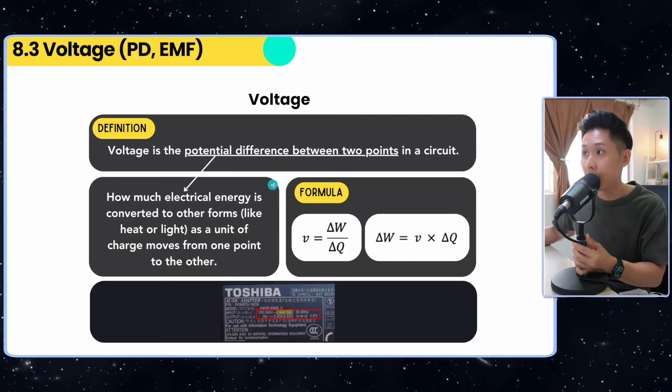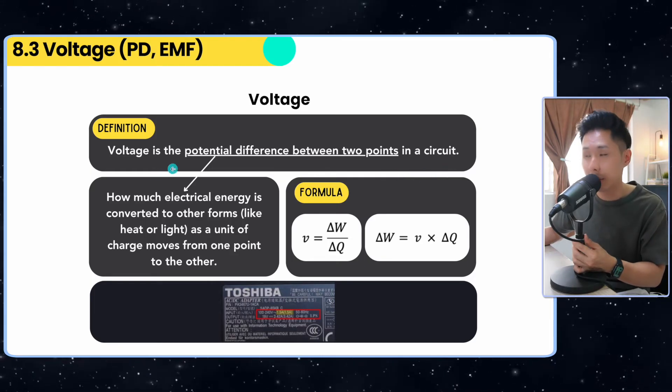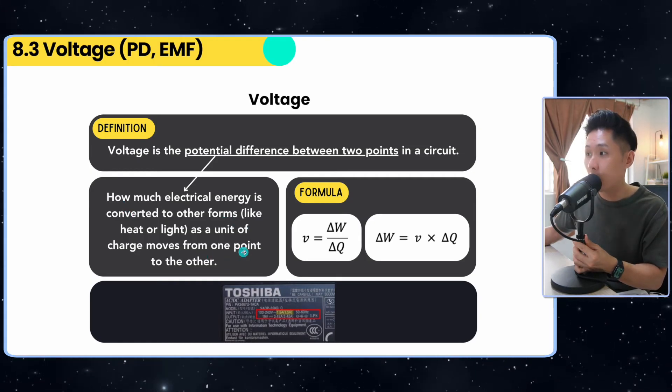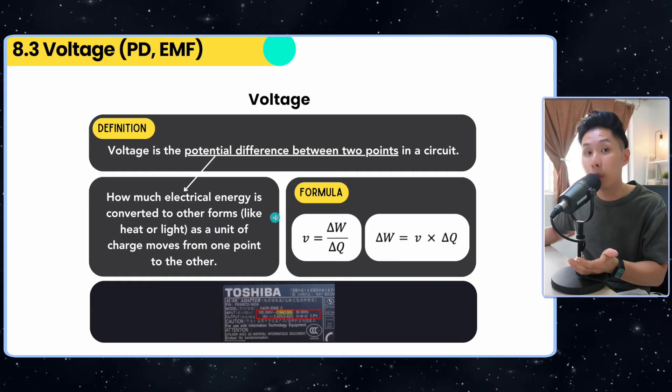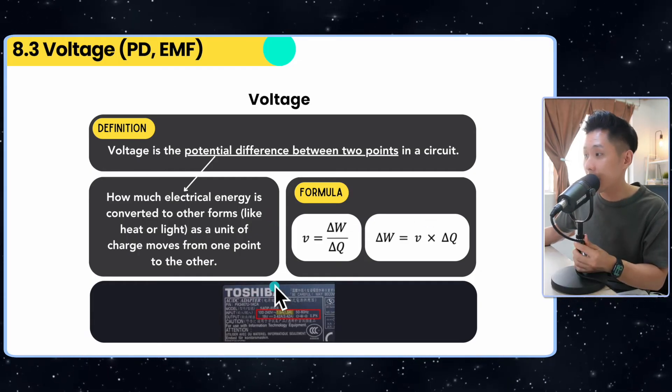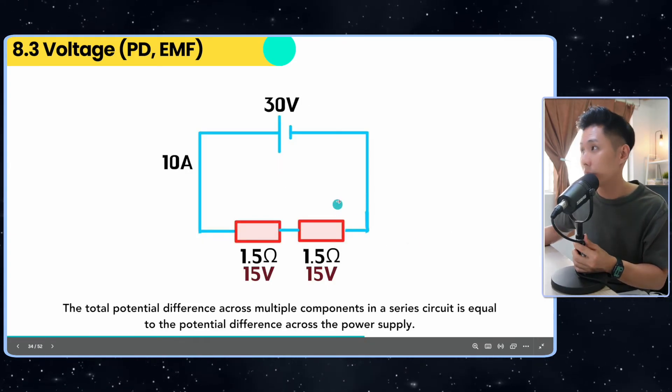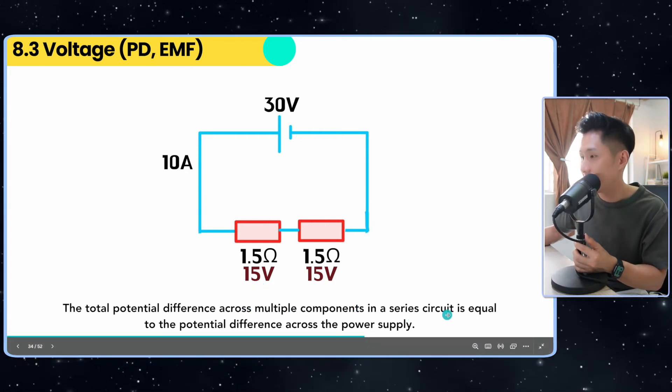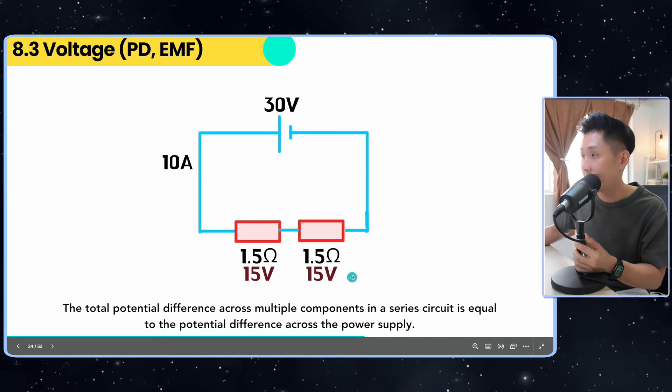Now let's look into voltage. We have talked about current. So voltage is the potential difference between two point in circuit. But what is potential difference? Potential difference is just how much energy is being converted to other form as a unit charge move from one point to another. The way I like to phrase it is how much work is being done to move one coulomb of charge. So the more work is being done, the more charge is being moved. Usually in electrical appliance, they will tell you what's the voltage of that device. So one thing about voltage, we have learned this in IGCSE, is that the potential difference across multiple components in a series circuit is equal to the potential difference across the power supply. 15 plus 15, you got 30.